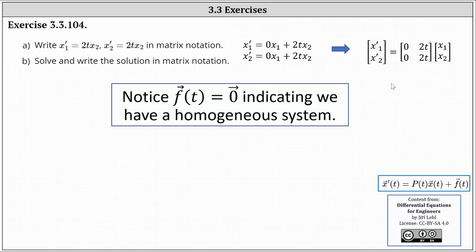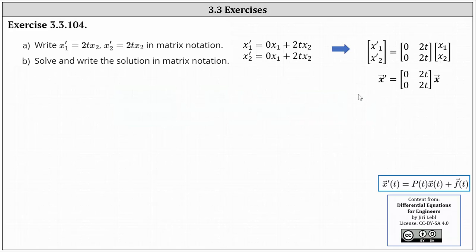It is common to replace the two-by-one matrix with x₁' and x₂' with just x' or x'(t), and also replace the two-by-one matrix with x₁ and x₂ with just x or x(t). Because it's strictly asking for matrix notation, I would leave it in this first form. Now we need to solve the system and write the solution in matrix notation.